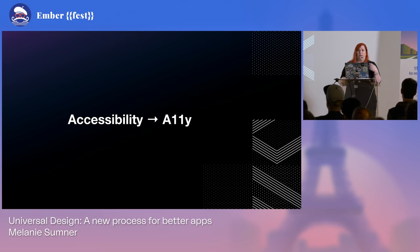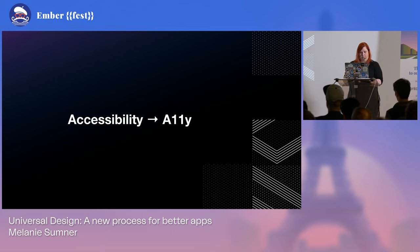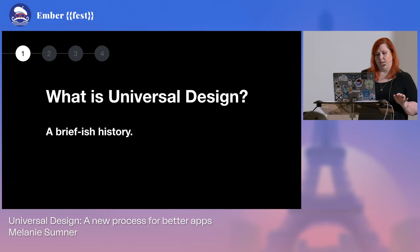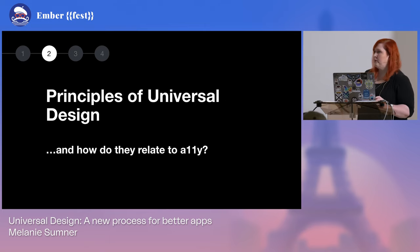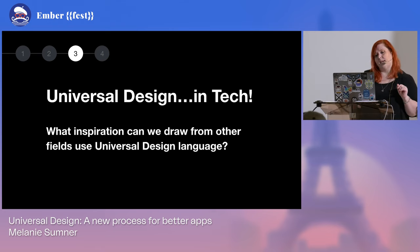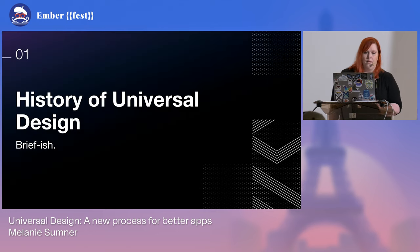Welcome, everyone — especially if it's your first time! You'll hear me talk about a11y. Accessibility has 11 letters between the A and the Y, so a11y is the shortcut, like internationalization becomes i18n. There are four sections today: what is universal design, the principles of universal design and how they relate to things we already know, universal design in tech and how we could get there as an industry, and action steps — seven things you can do pretty soon.